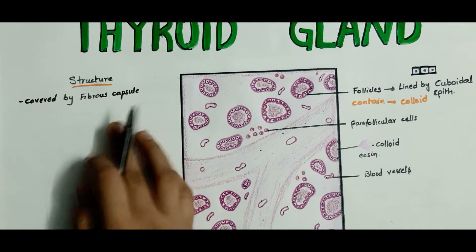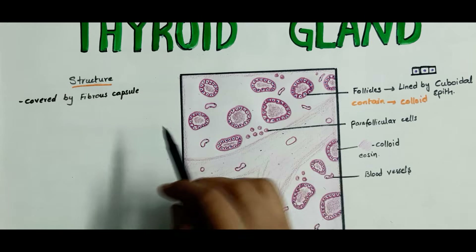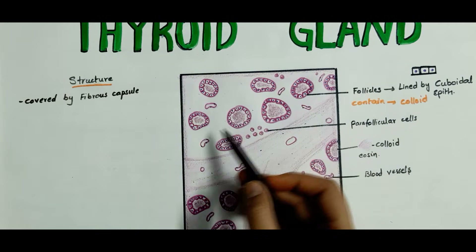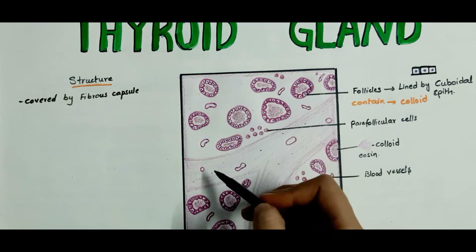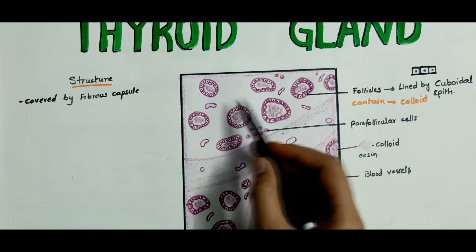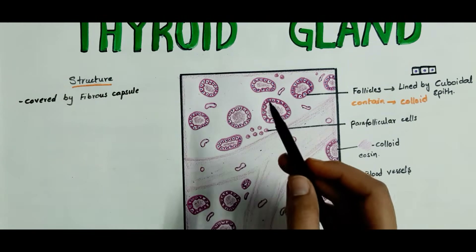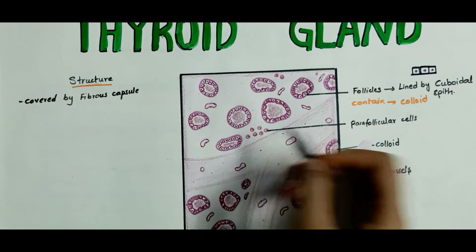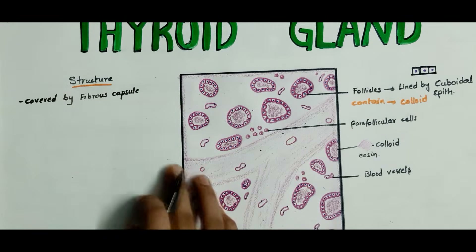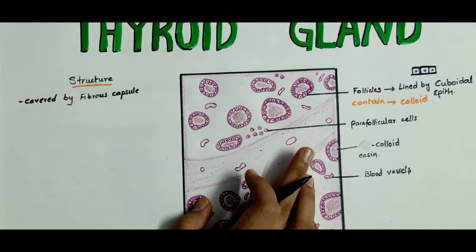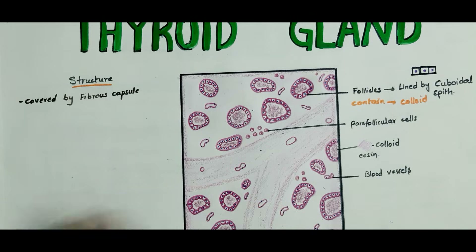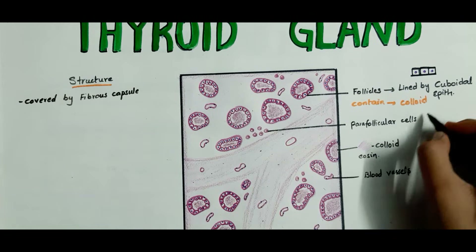Coming to the structure of the thyroid gland, the thyroid gland is covered by a fibrous capsule. This capsule has fibrous septa that divide the gland into lobules. The spaces between the follicles and the septa are filled by a stroma made up of connective tissue with numerous capillaries and lymph vessels.